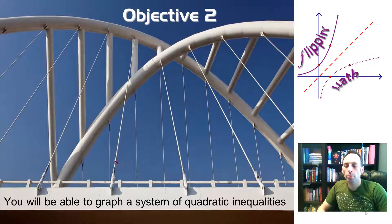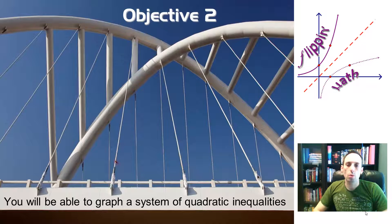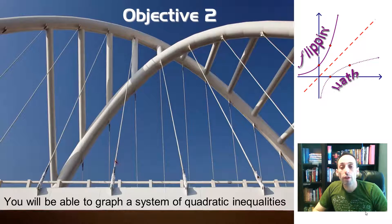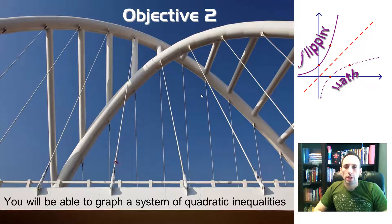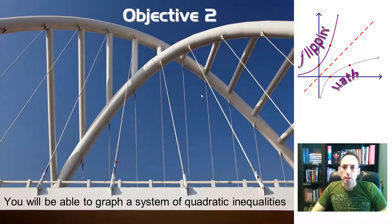Now we're doing objective two, being able to graph a system of quadratic inequalities. So now I've got more than one parabola that I have to do some shading on.